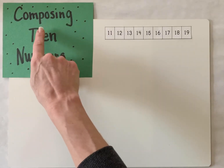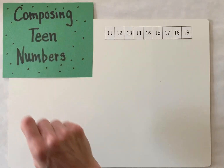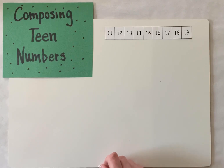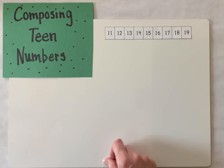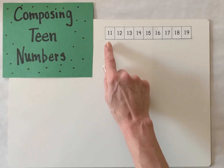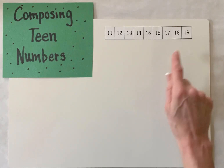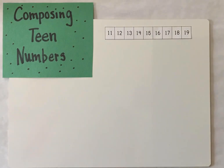So let's talk about what does it mean to compose a number. It means that we're going to join groups or sets of numbers to make another number. So for today, we're going to join two sets of numbers to create a teen number.